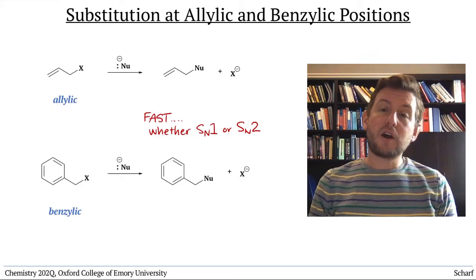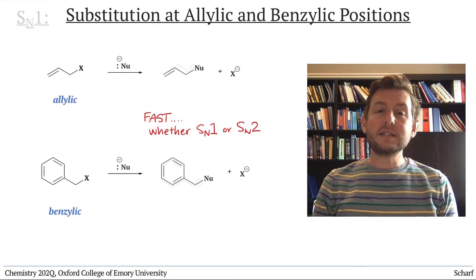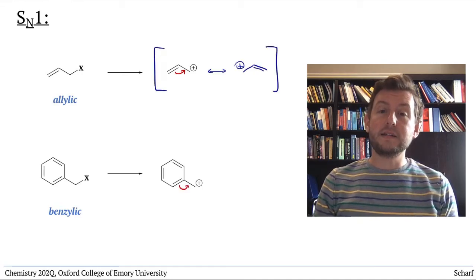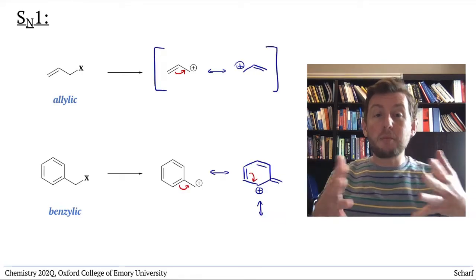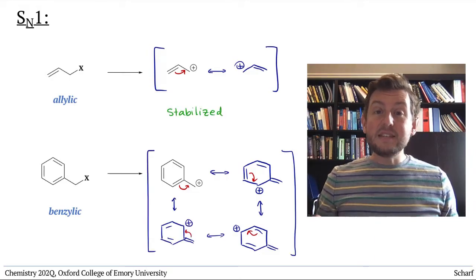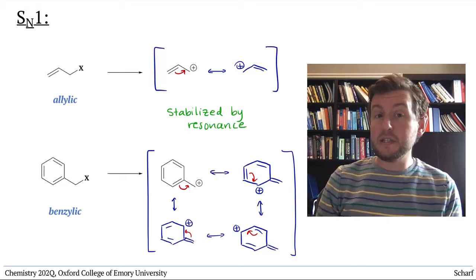In the video on carbocation stability we discussed how resonance stabilizes allylic and benzylic carbocations by distributing the carbocation's positive charge over multiple atoms. This speeds up SN1 reactions pretty significantly.